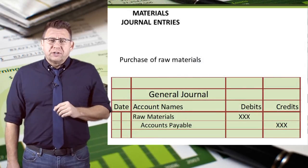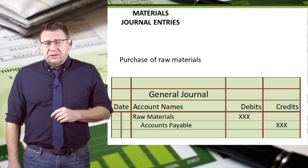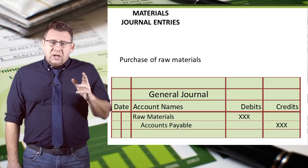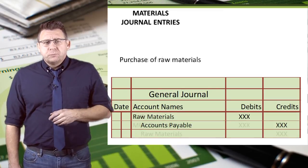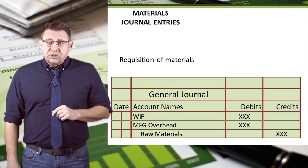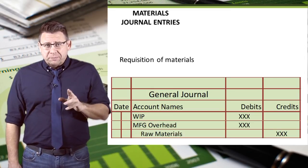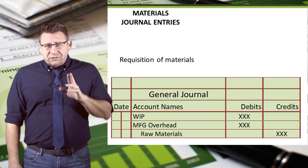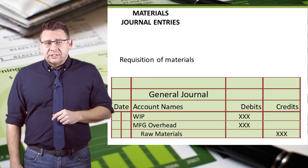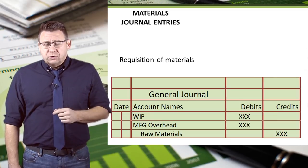Finally, let's look at the journal entries for raw materials. The purchase of raw materials is a debit to raw materials and a credit to accounts payable. When materials are requisitioned to production, this is a debit to WIP for the direct materials, a debit to manufacturing overhead for any indirect materials, and a credit to the raw materials inventory account.